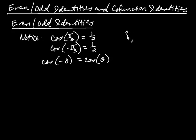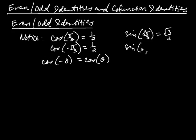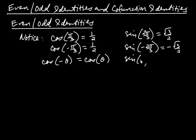For sine, if you take sine of 2pi over 3, we know that's equal to root 3 over 2. But sine of negative 2pi over 3 is equal to negative root 3 over 2. So you get the opposite output when you take the opposite input. That's true for any angle: sine of the negative of an angle gives you the negative of sine of theta.